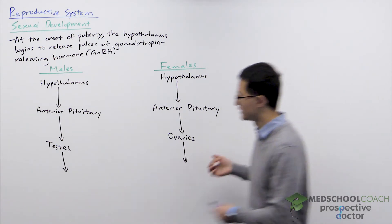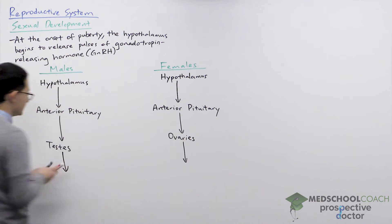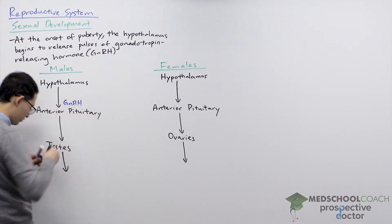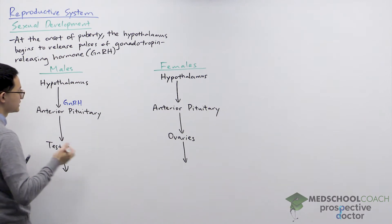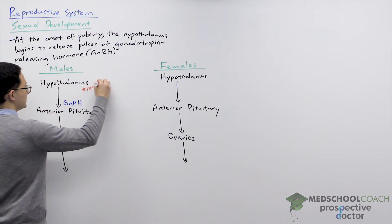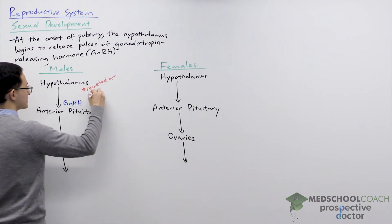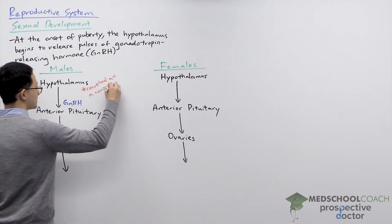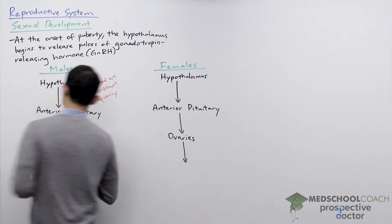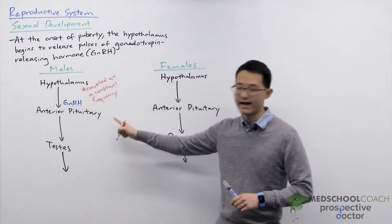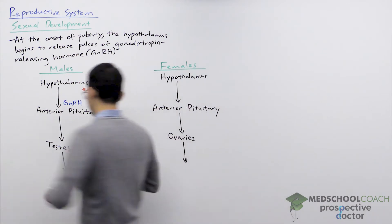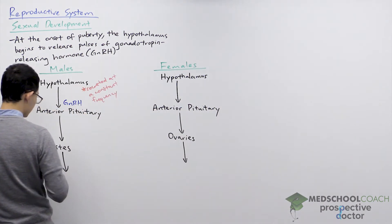In males, when the hypothalamus secretes GnRH, these pulses have a constant frequency throughout their life. Gonadotropin releasing hormone is then going to act on the anterior pituitary gland of males to cause the release of luteinizing hormone (LH) as well as follicle stimulating hormone (FSH).